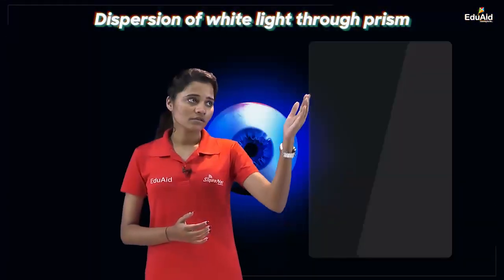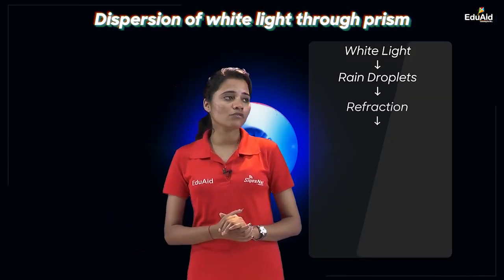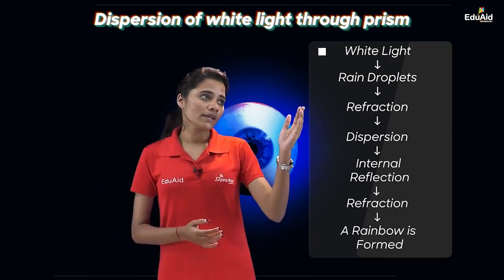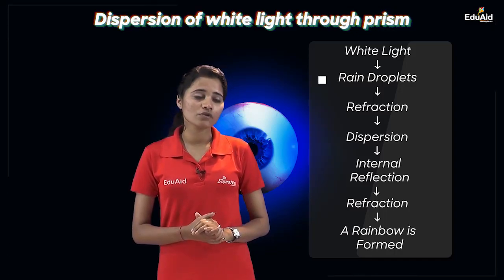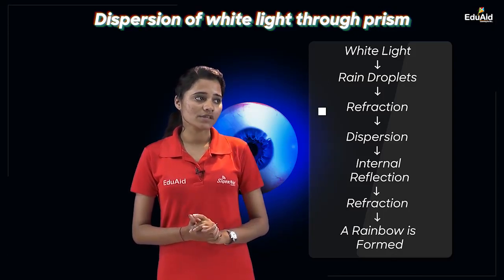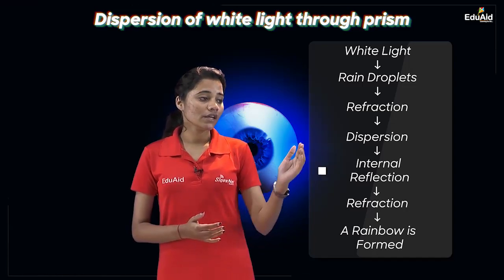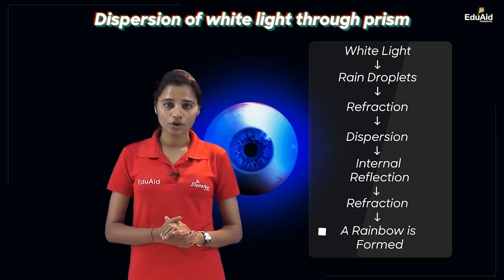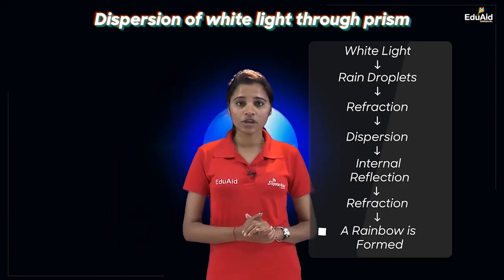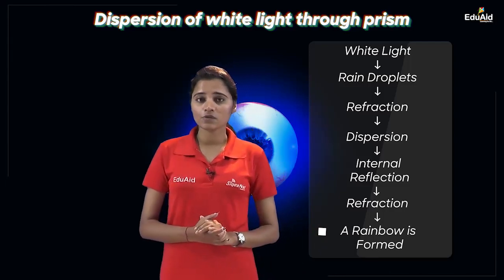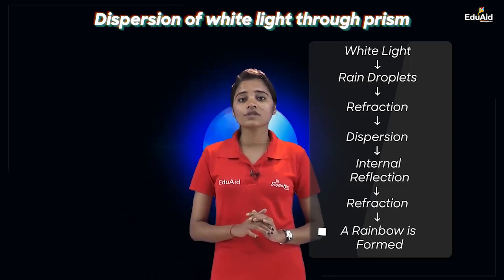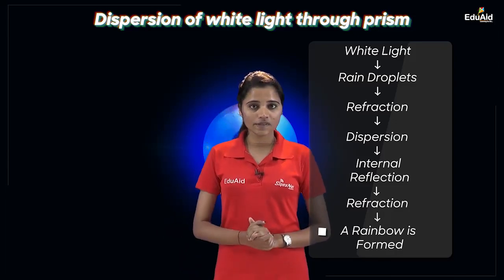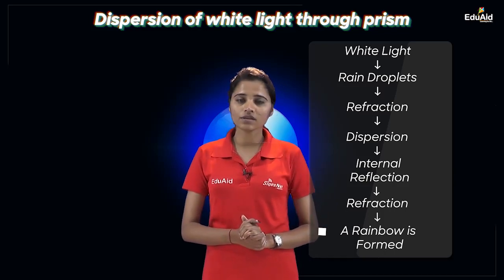The phenomena involved in the formation of a rainbow can be summarized as: white light encounters rain droplets, refraction takes place, then dispersion, then internal reflection, then further refraction, and finally a rainbow is formed. We learned how a rainbow is formed — it is because of dispersion, which plays a major role. We also learned about dispersion of white light through a glass prism. That's all for this session. In the upcoming session, we shall be learning about atmospheric refraction. Thank you.